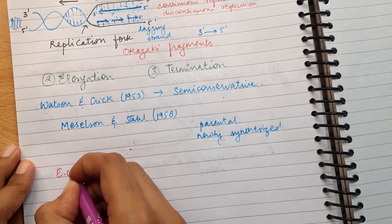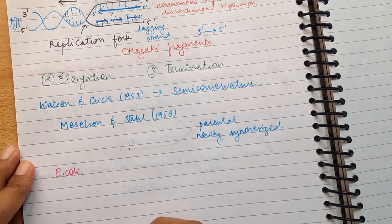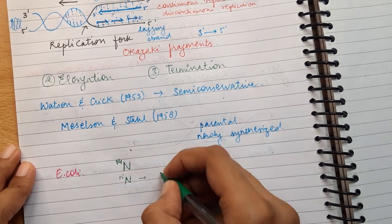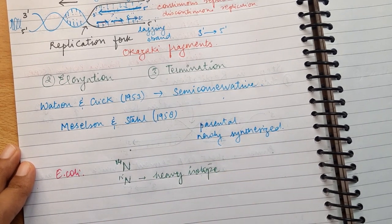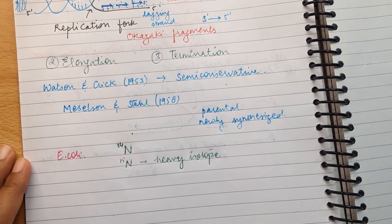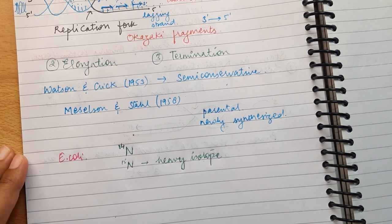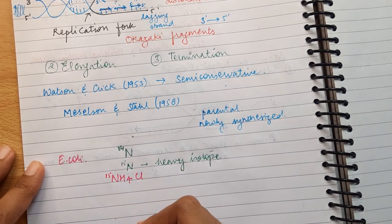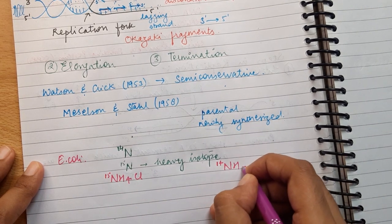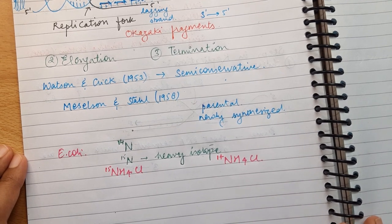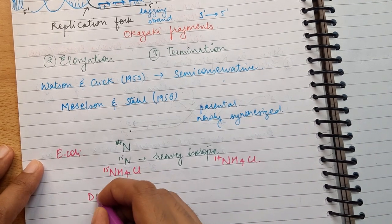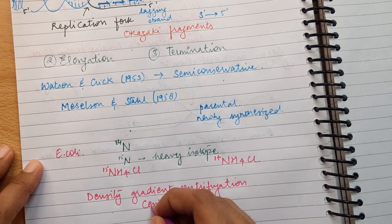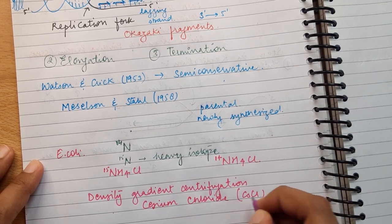Now what they did was they grew E. coli in a culture medium. Now nitrogen is present in our DNA bases, and N14 is the light or the normal nitrogen and N15 is the heavy isotope of nitrogen. Now the culture medium which they used contained NH4Cl with the heavy nitrogen. This became the source of nitrogen for many generations. As a result, N15 was incorporated into newly synthesized DNA. Then they transferred the cells into a medium with normal NH4Cl with the light nitrogen and took samples at various definite time intervals. Now they used something known as density gradient centrifugation which helped them to separate the samples on the basis of their densities. And for this particular experiment, they used cesium chloride density gradient.